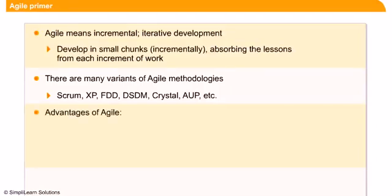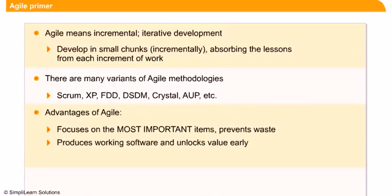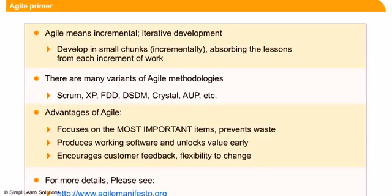Let us look at the advantages of Agile. Agile focuses on the most important, high-priority items and prevents waste. It produces working software quickly and delivers value to the customer at the earliest, helping to build products fast and on time while encouraging customer engagement. Feedback from customers is immediately incorporated in the next incremental release, and there is flexibility in prioritizing features based on customer or market demand. For more details, visit www.agilemanifesto.org.